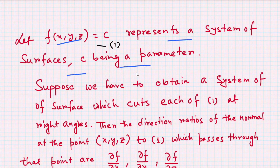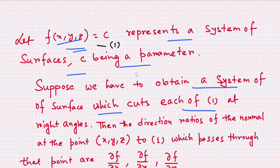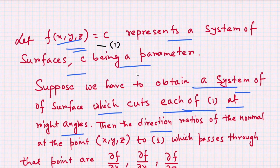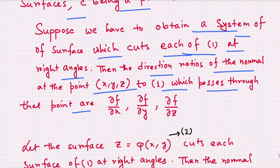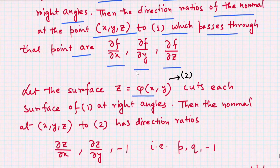So suppose f(x,y,z) represents a system of surfaces. We have to obtain a system of surfaces which cuts each one at right angles, that is, perpendicularly. The direction ratios of the normal at a point (x,y,z) to a surface passing through that point are ∂f/∂x, ∂f/∂y, and ∂f/∂z.